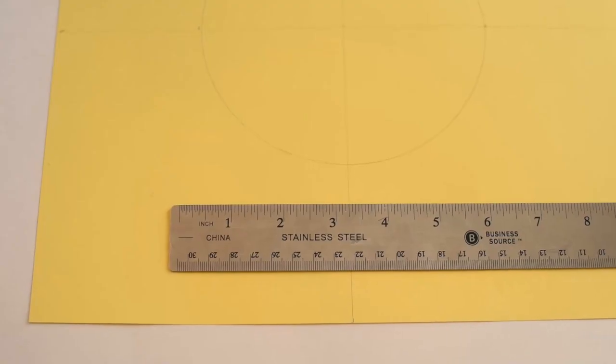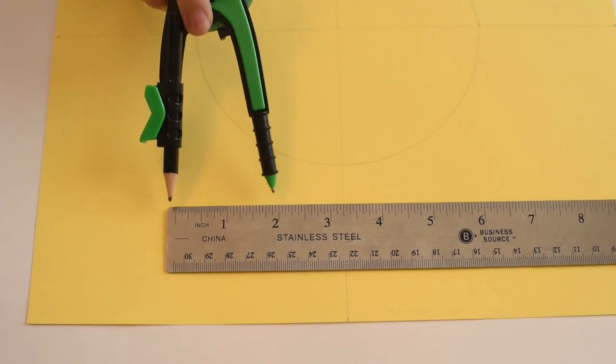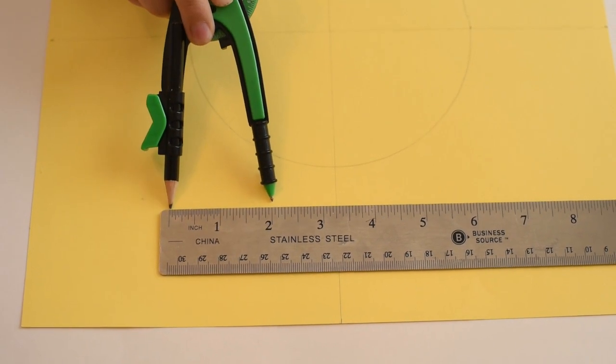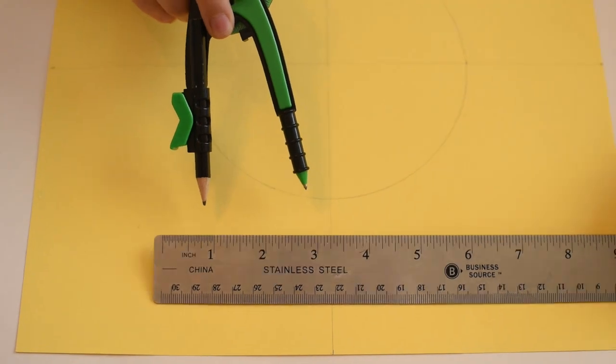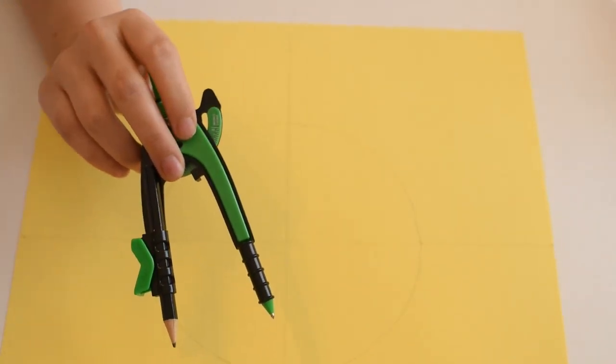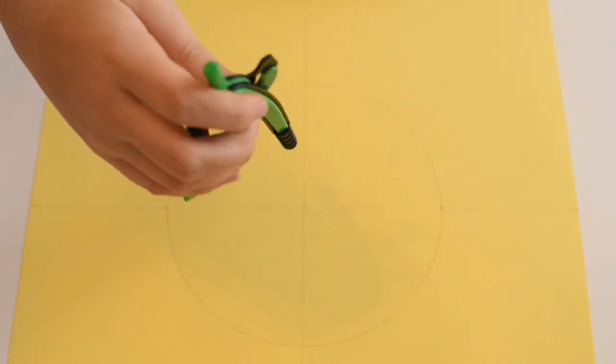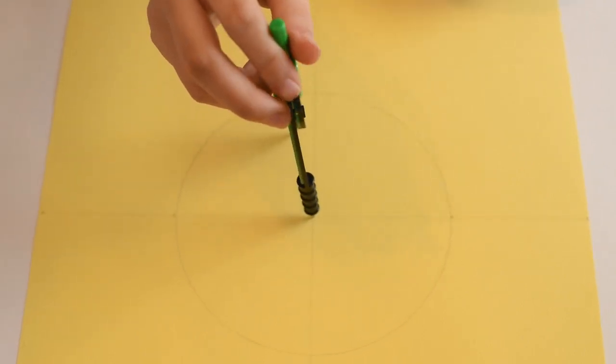We're next going to set our compass at 2 inches. And from that middle point, we're going to draw a 2 inch circle with our compass inside that 3 inch circle.